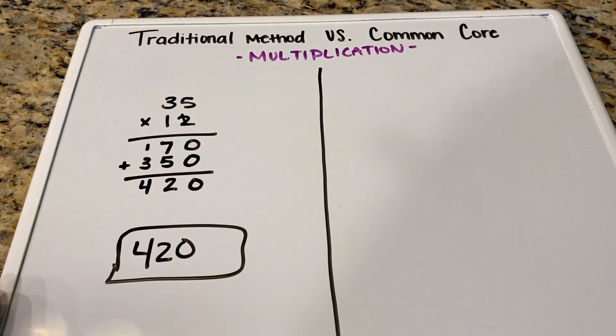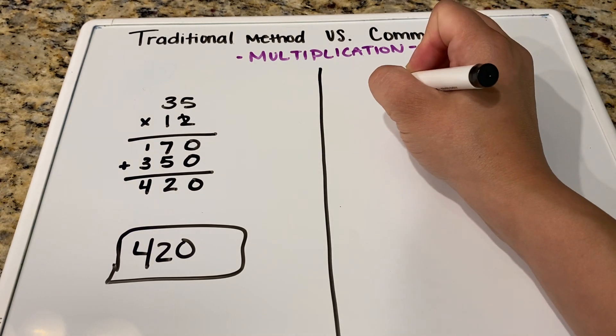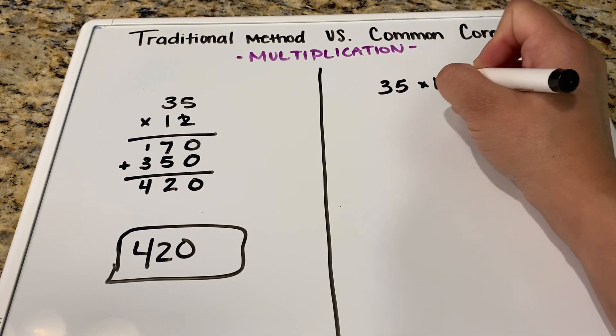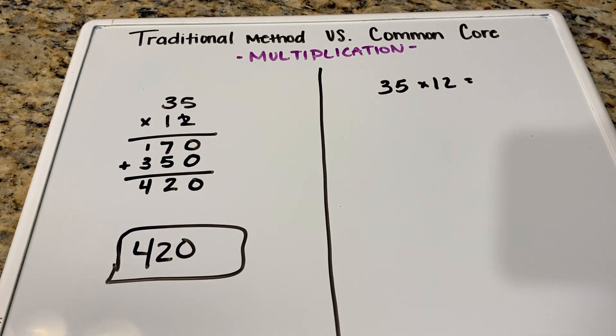And so 35 times 12 is 420. And that is how we get our answer the traditional way. So a lot quicker. It took me a little under two minutes to do that. So now over here, we are going to do the common core way. So again, let's do the same problem. We have 35 times 12, and we're trying to find our answer.